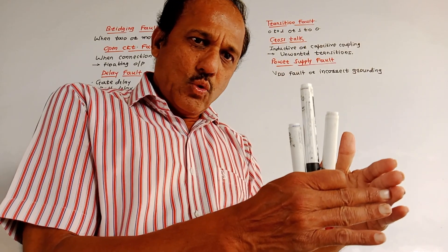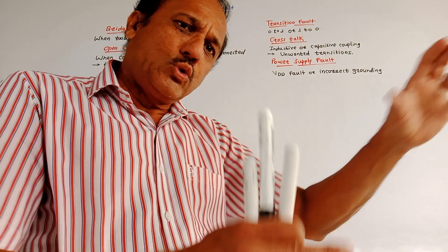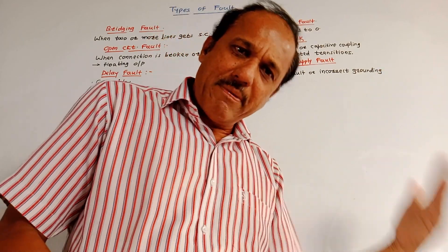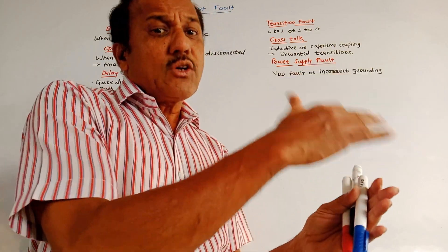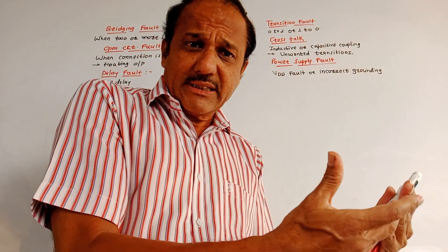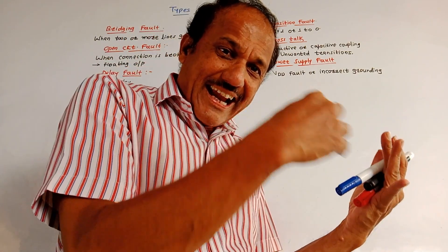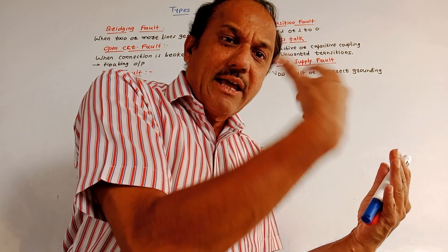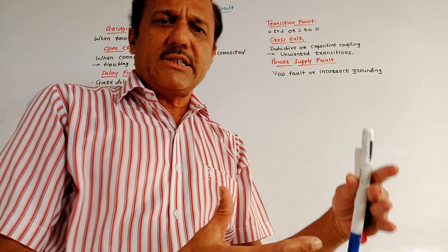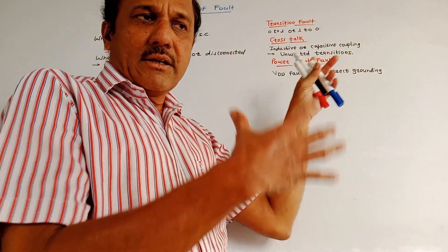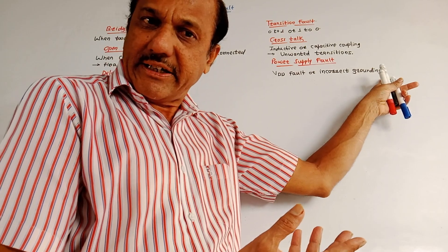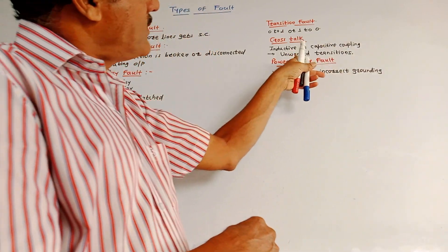Next and an important type of fault is crosstalk. Crosstalk is related to the mutual transfer of information between two conductive paths. If two conductive paths are nearby, there may be inductive or capacitive coupling, causing a crosstalk effect. If one conducting path carries a high-power or high-frequency signal, it creates high voltage spikes in the neighboring wire. Next is power supply fault. It is related to the power supply connected to the circuit — the supply itself may be faulty, or there may be incorrect grounding, causing errors.